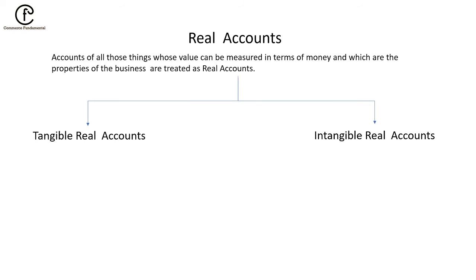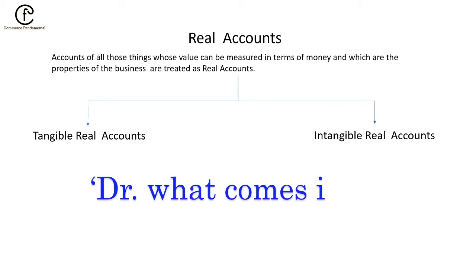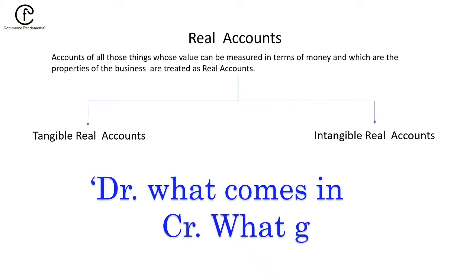Now, what is the second golden rule of the double entry system? That is: Debit what comes in, Credit what goes out.